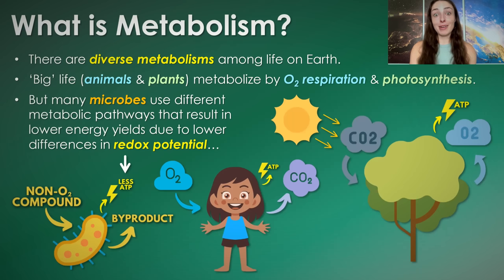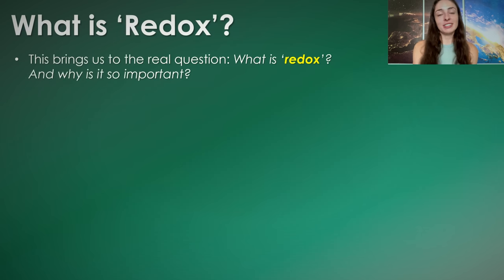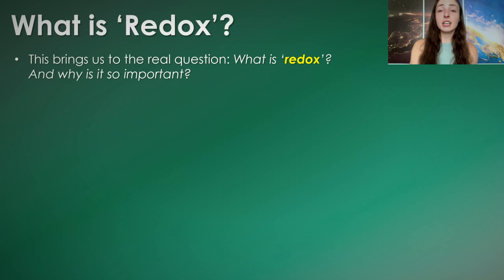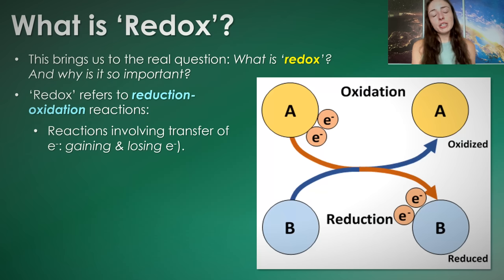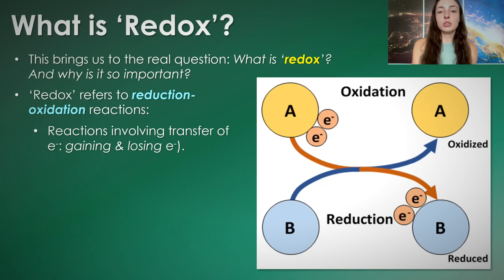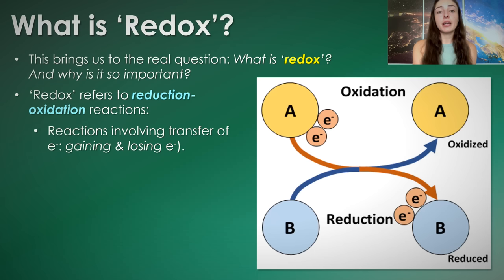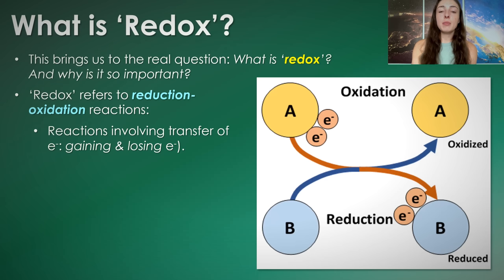Let's back up and talk about what redox is and why it's so important. I'm going to talk about electrons here, but it's very simple. Redox just refers to reduction and oxidation chemical reactions — reactions that involve the transfer of electrons. Reduction is the gaining of electrons, because you're reducing the charge of that molecule by adding more negatively charged electrons. Oxidation is the losing of electrons, becoming more oxidized — in other words, less negatively charged.